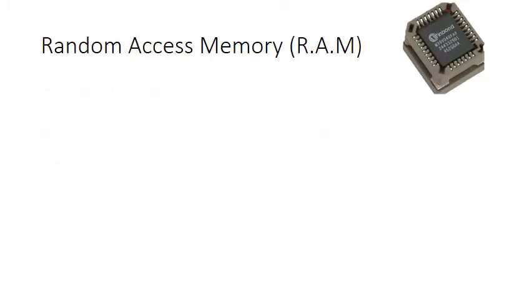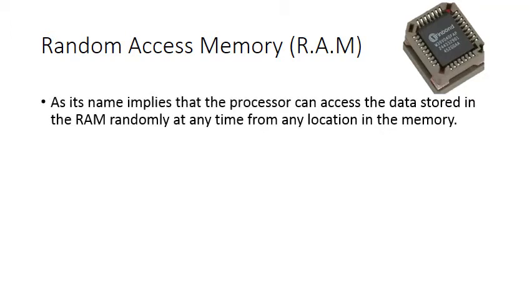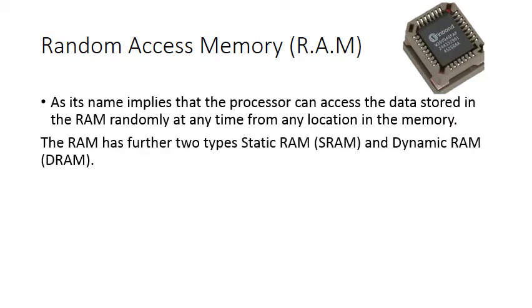Random access memory is your first hardware component, also known as RAM. There is a picture of a RAM chip. As its name implies, the processor can access the data stored in RAM randomly at any time from any location in memory. The RAM has further two types: static RAM and dynamic RAM.